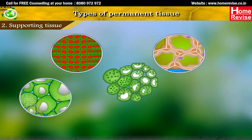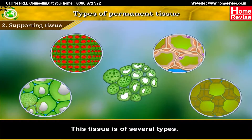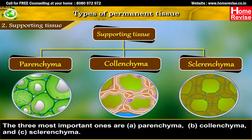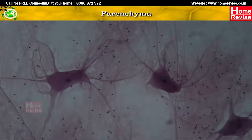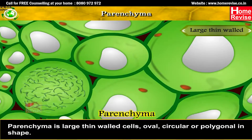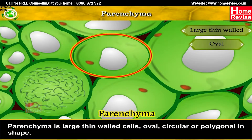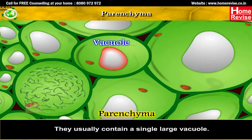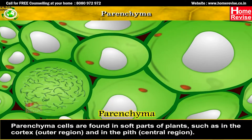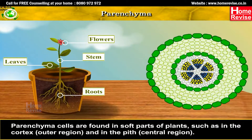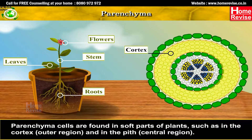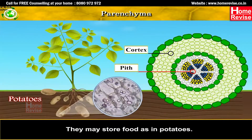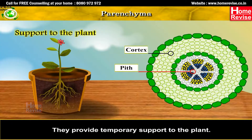Supporting tissue is of several types; the three most important ones are parenchyma, colenchyma and sclerenchyma. Parenchyma consists of large, thin-walled cells, oval, circular or polygonal in shape. They usually contain a single large vacuole. Parenchyma cells are found in soft parts of plants, such as in the cortex (outer region) and in the pith (central region). They may store food, as in potatoes, and provide temporary support to the plant.